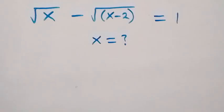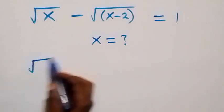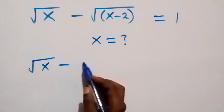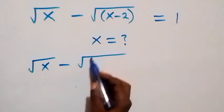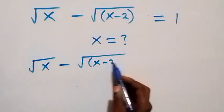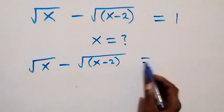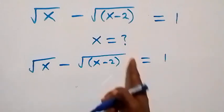Hello, you are welcome. How to solve for x in this nice math problem involving square roots. From what is given here, we have √x minus √(x-2) equals 1, and from here we can square both sides directly.